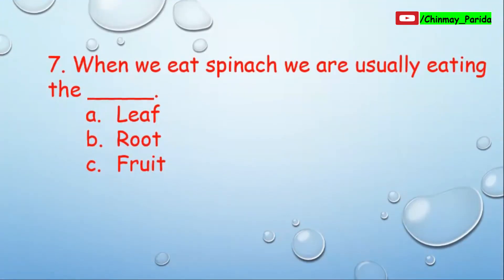Question number seven: When we eat spinach, we are usually eating the — option A: leaf, option B: root, option C: fruit. The correct answer is option A, leaf. We eat the leaf of the spinach plant.